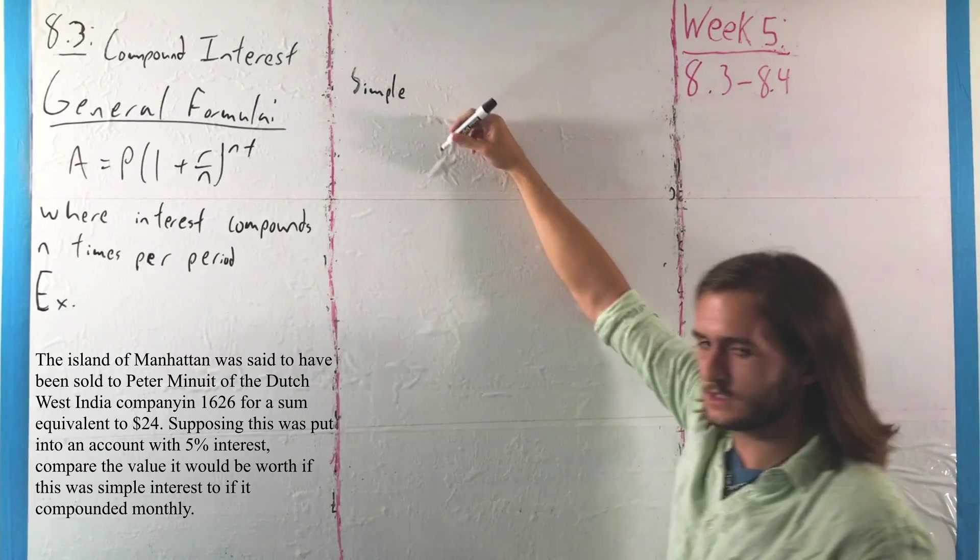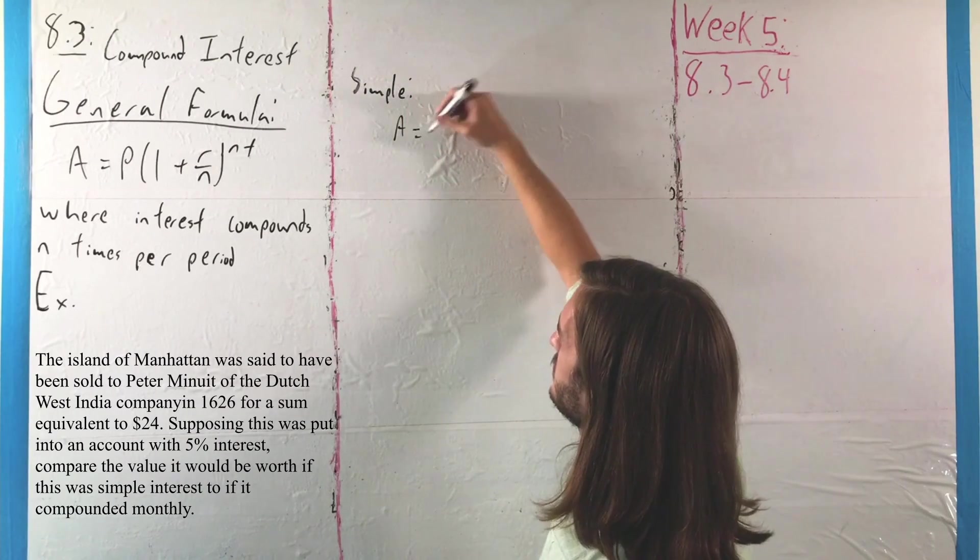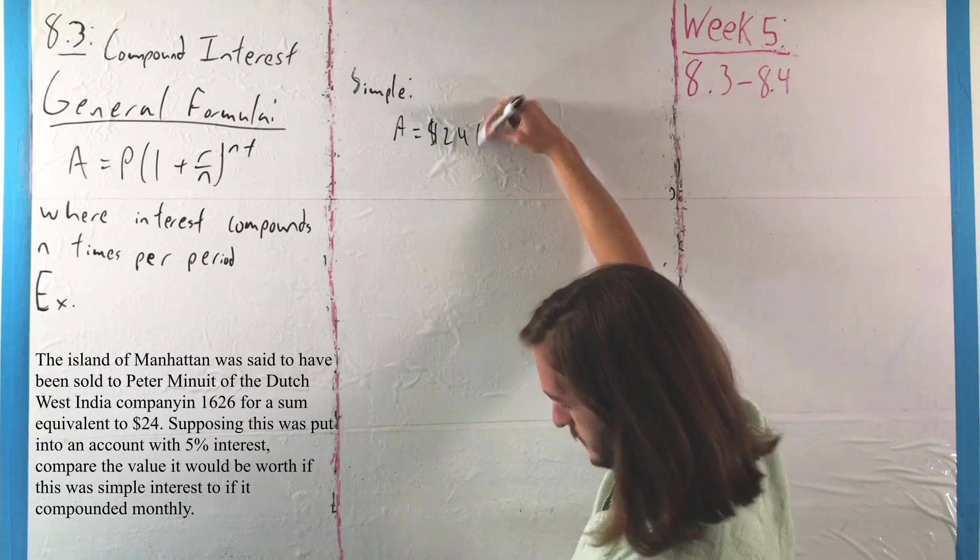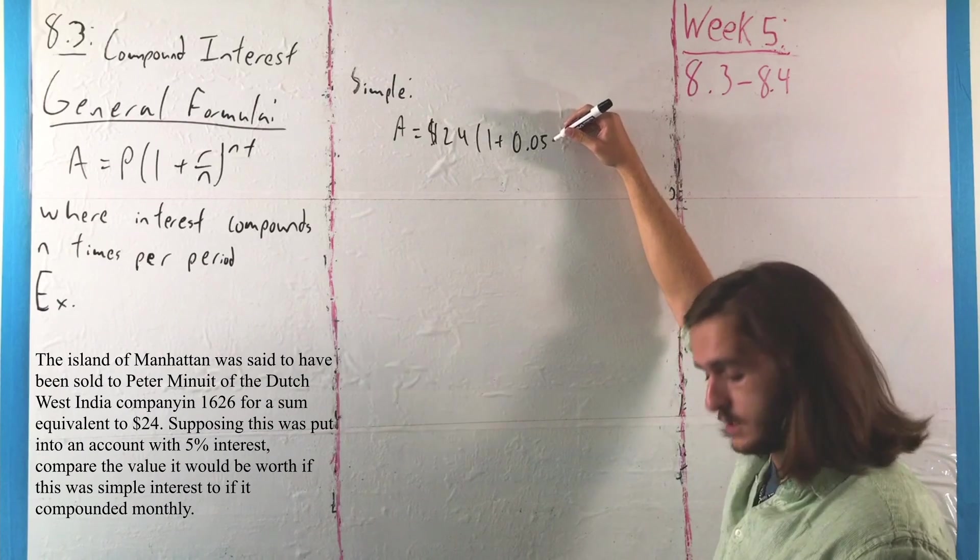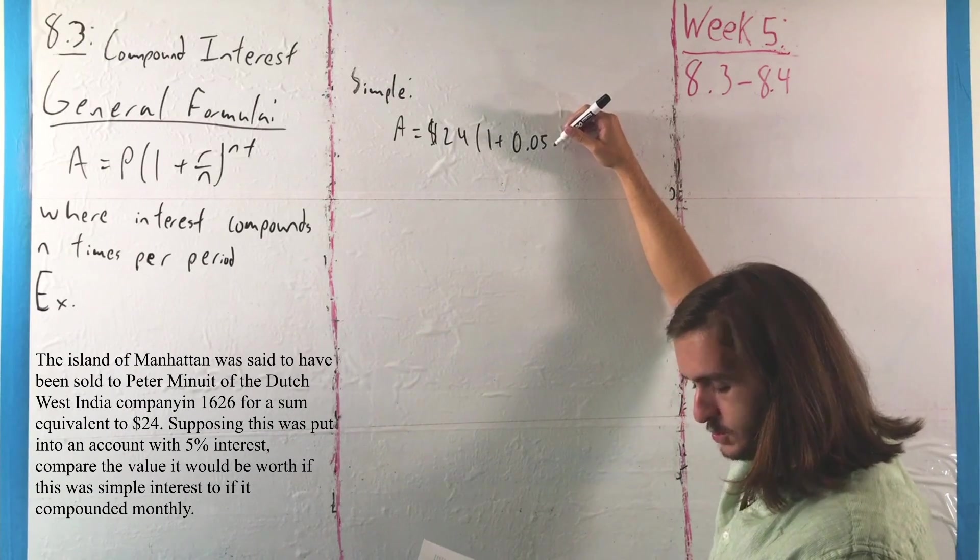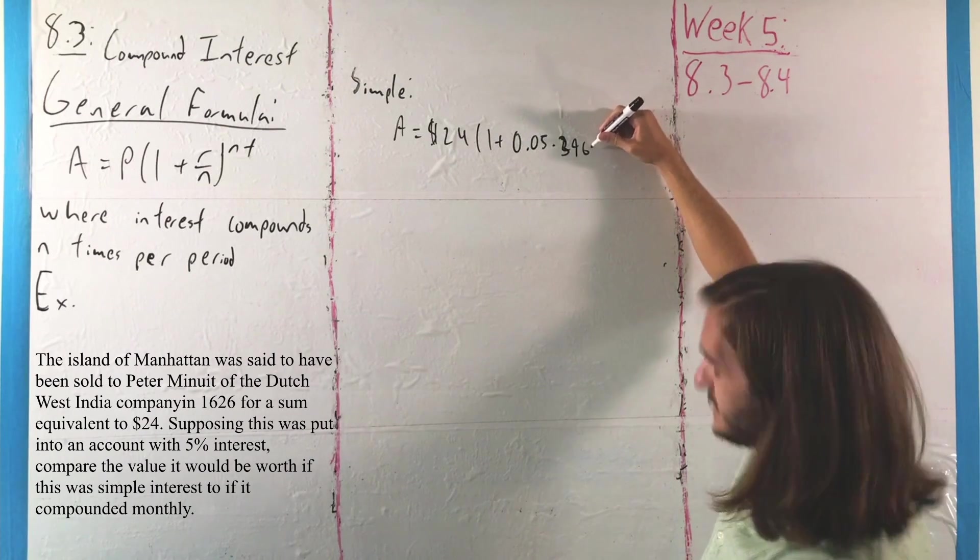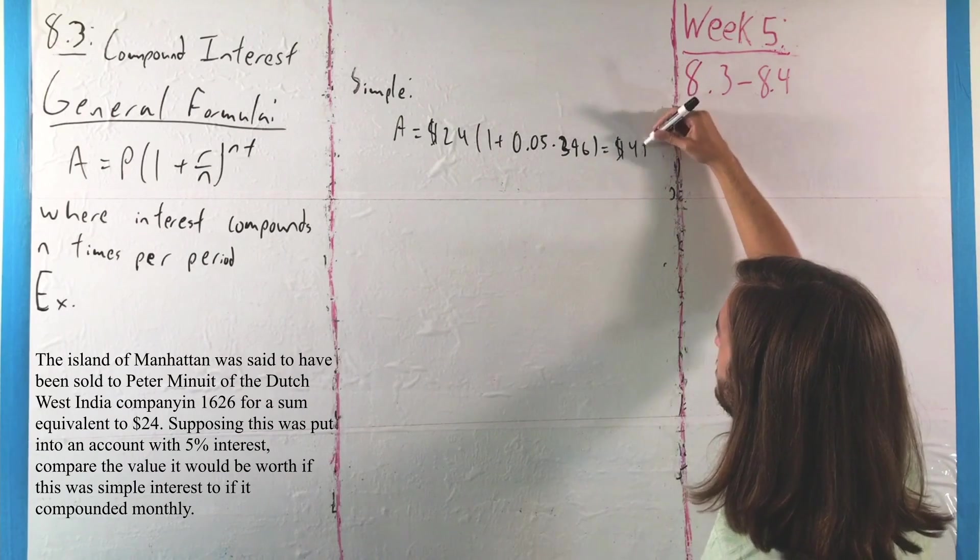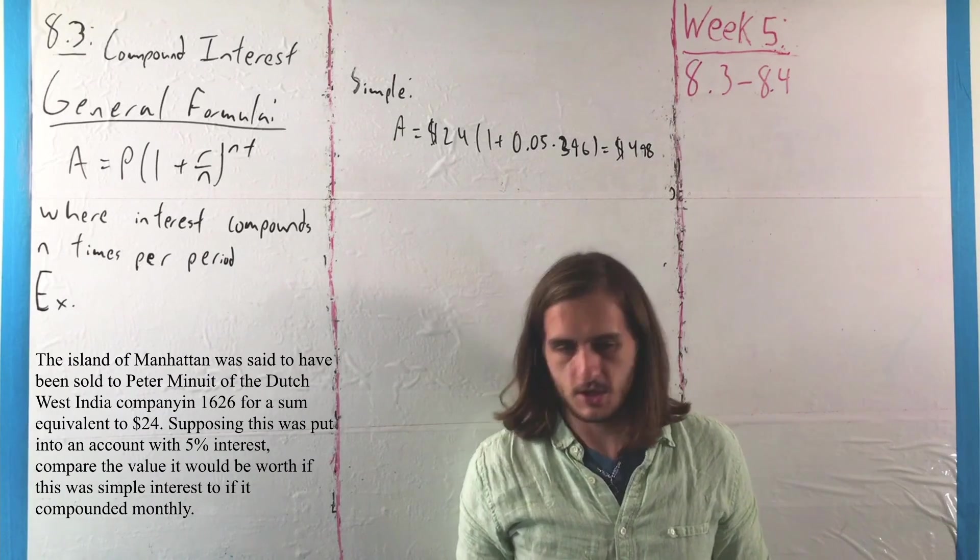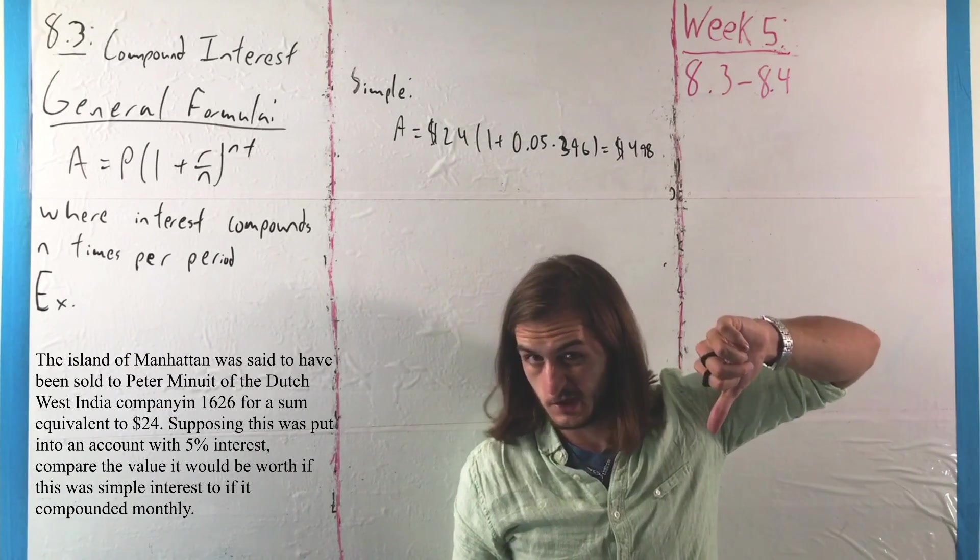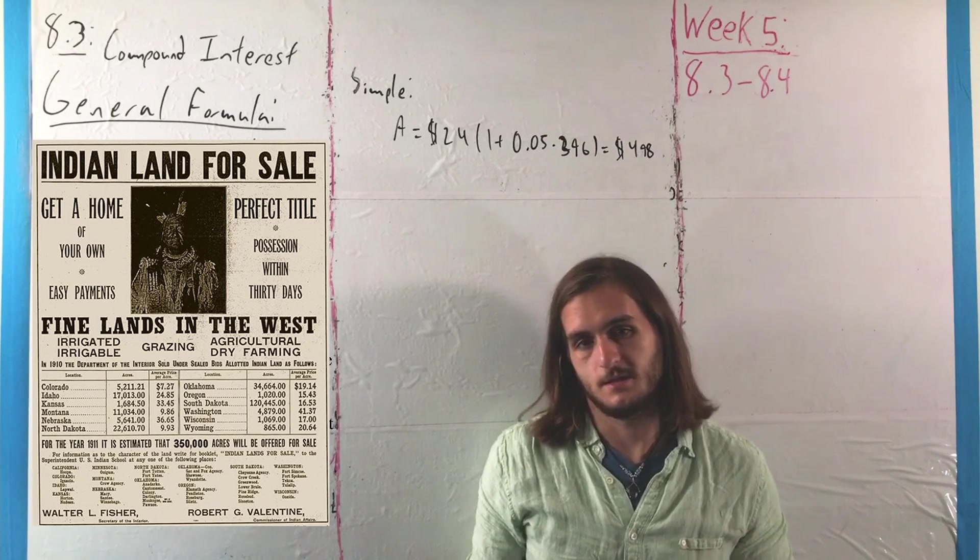Sorry, my pen is complaining with me because I spent too long talking. I'm sure you are as well, so you can sympathize. We would have that the amount is given by the principal, 24, multiplied by 1 plus the rate there of 5% times the time period here, which would be from 1626 to 2021, or a total of 396 years, which would give us a total of $498, which is to say less than they would have got from the value of inflation. And not a particularly good deal, unfortunately, as many of the other deals that the tribes would get from the colonists and the Americans, like I said.